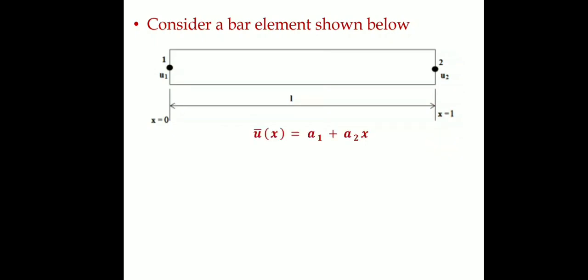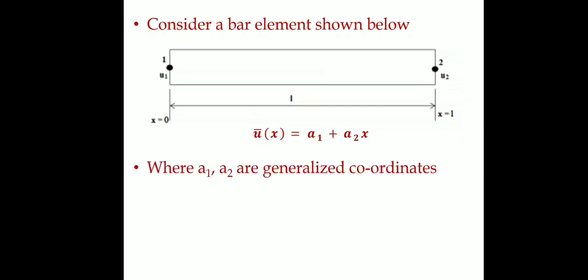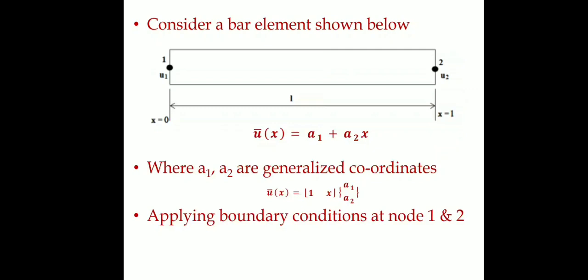Since we have two nodes and two terms, we use generalized coordinates a1 and a2. The displacement is u = a1 + a2·x, which in matrix form is u = [1, x] · [a1, a2]ᵀ. Now applying boundary conditions.